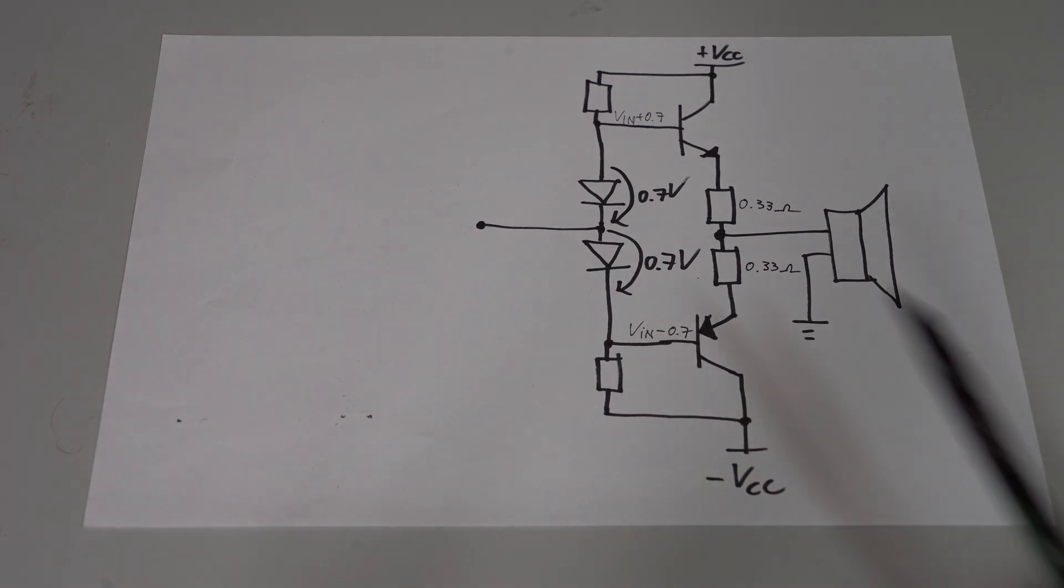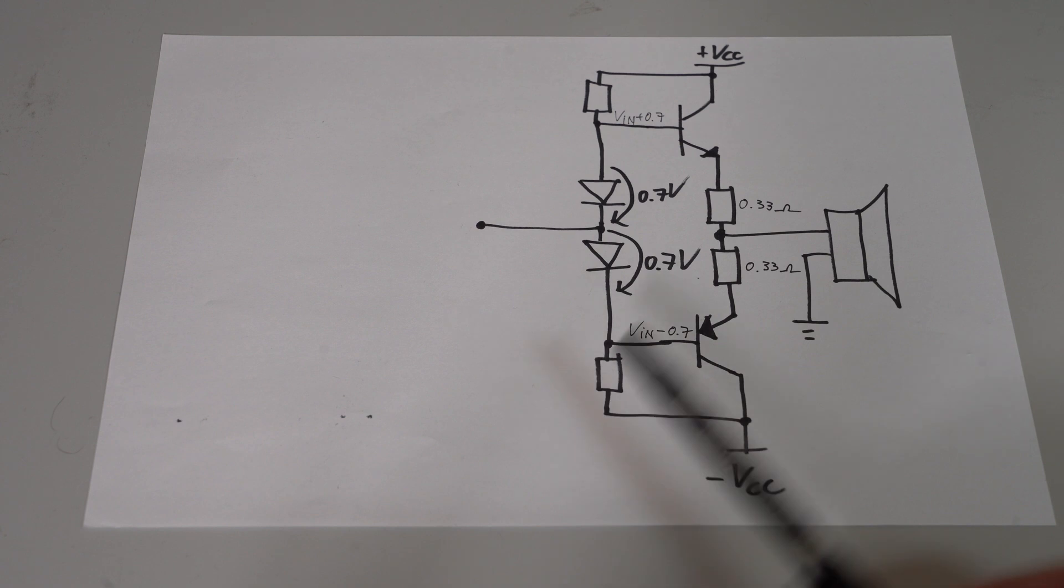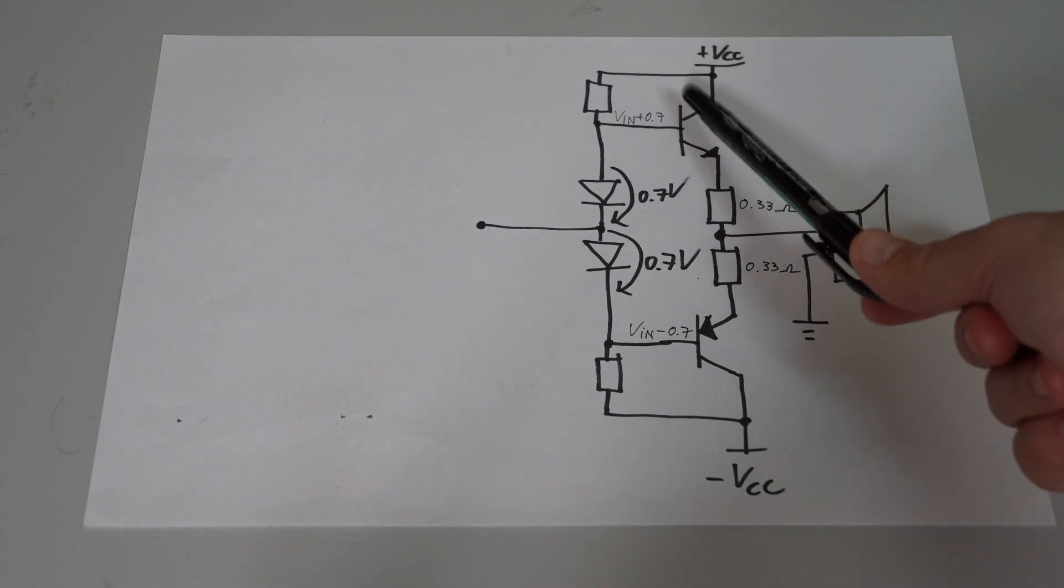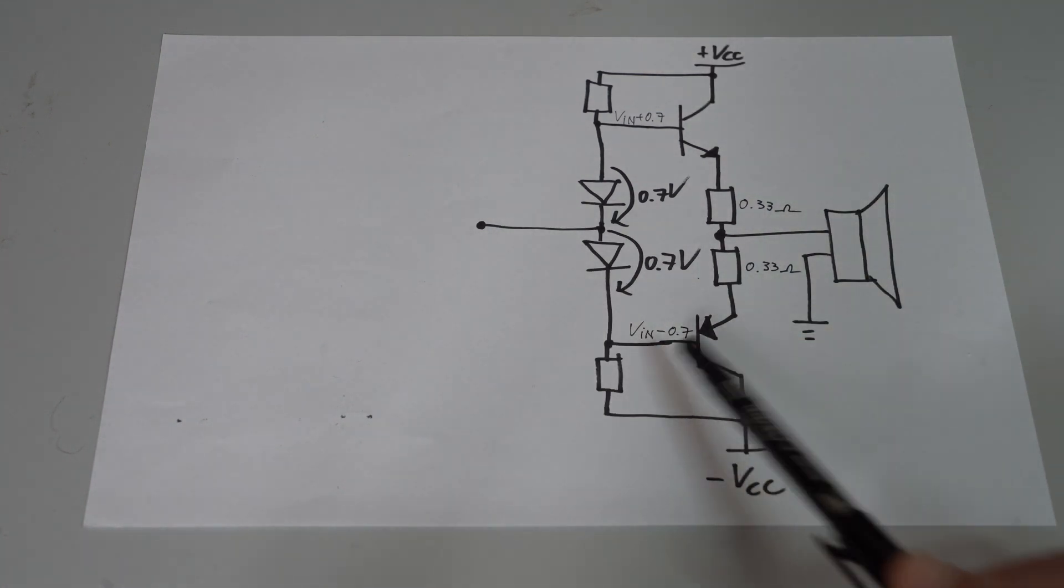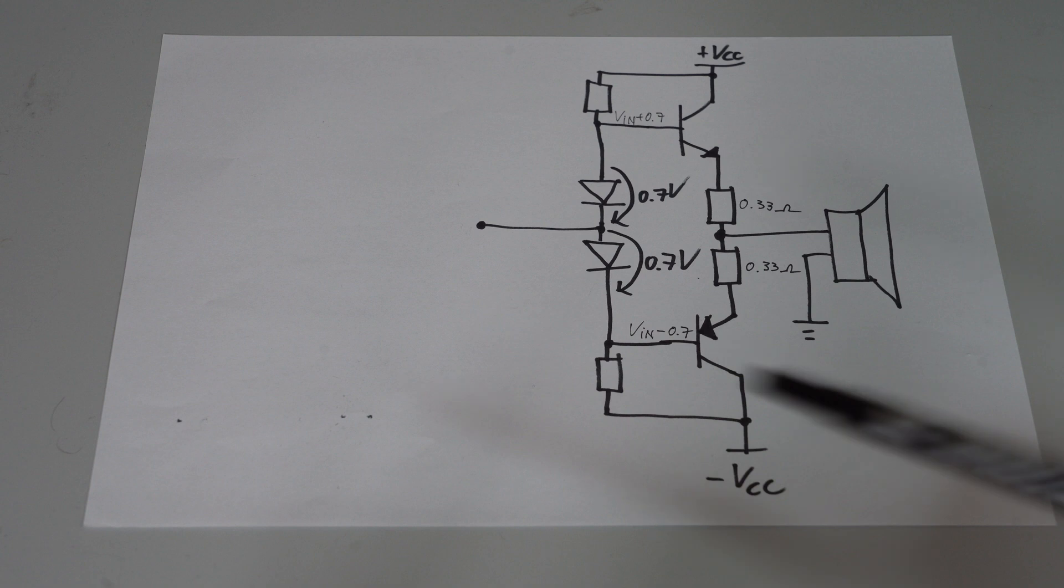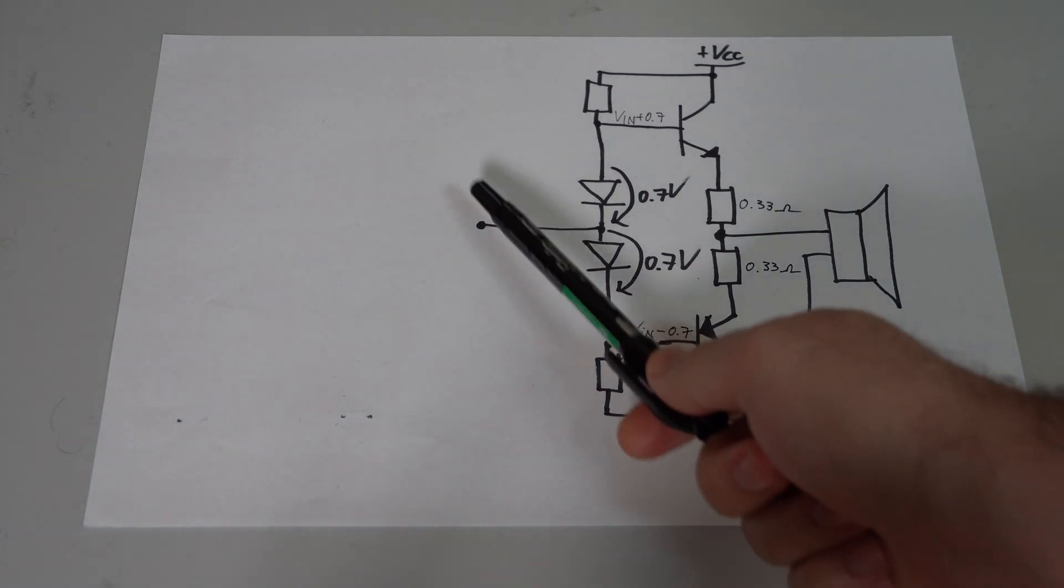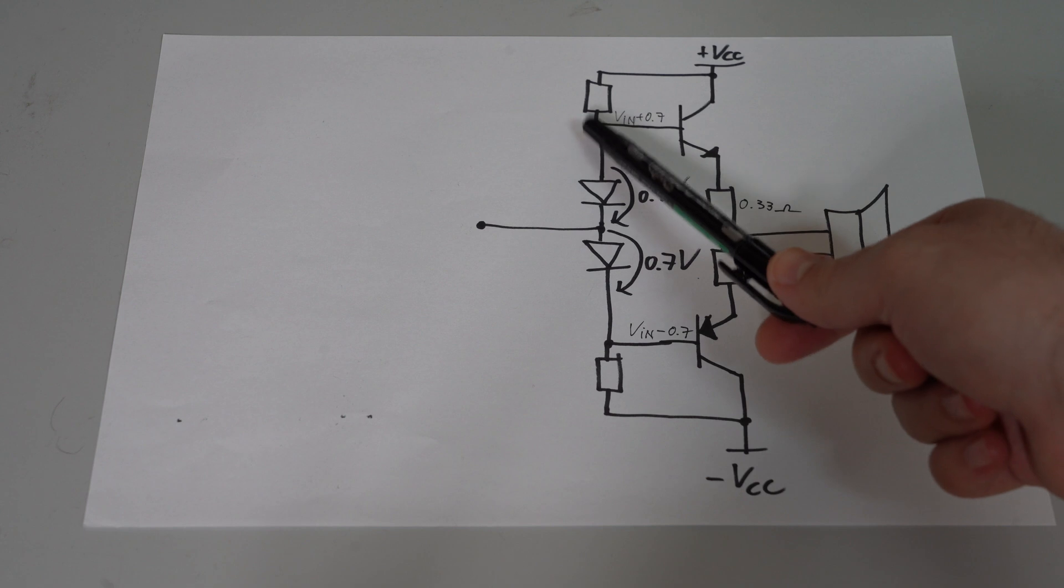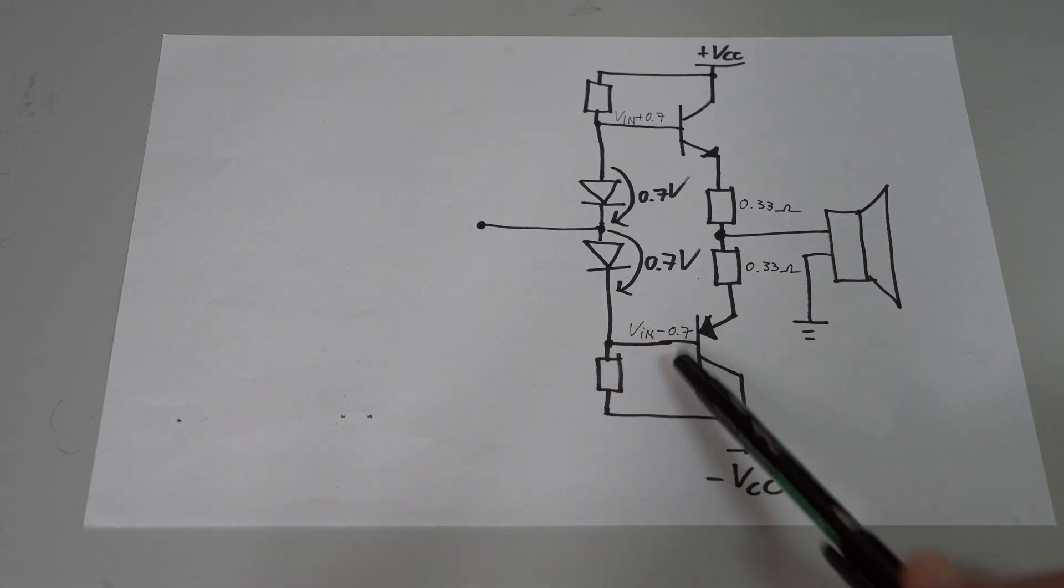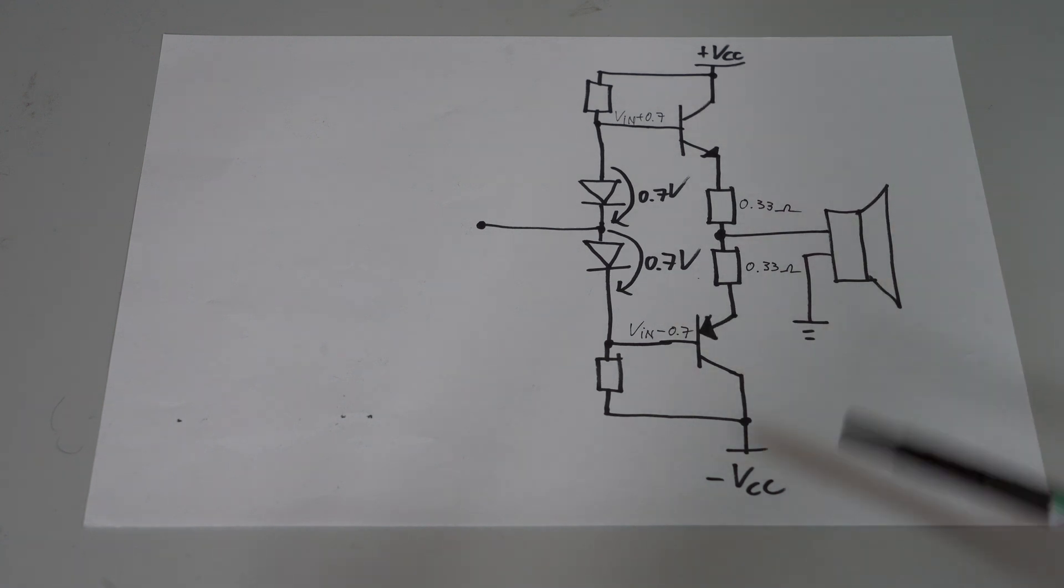So making the same analysis as before, assuming that we have zero volts at the input, here after the diode we have around 700mV, which is just enough to make this transistor conduct. And similarly for zero volts at the input, here we have minus 700mV, which makes the bottom transistor conduct as well. And now if we repeat the analysis assuming that we have an arbitrary voltage here, here we have our input voltage VIN plus 700mV, and here we have our VIN minus 700mV, which is once again the perfect condition for these transistors to conduct, while also applying the input voltage to them. So this gets rid of crossover distortion.